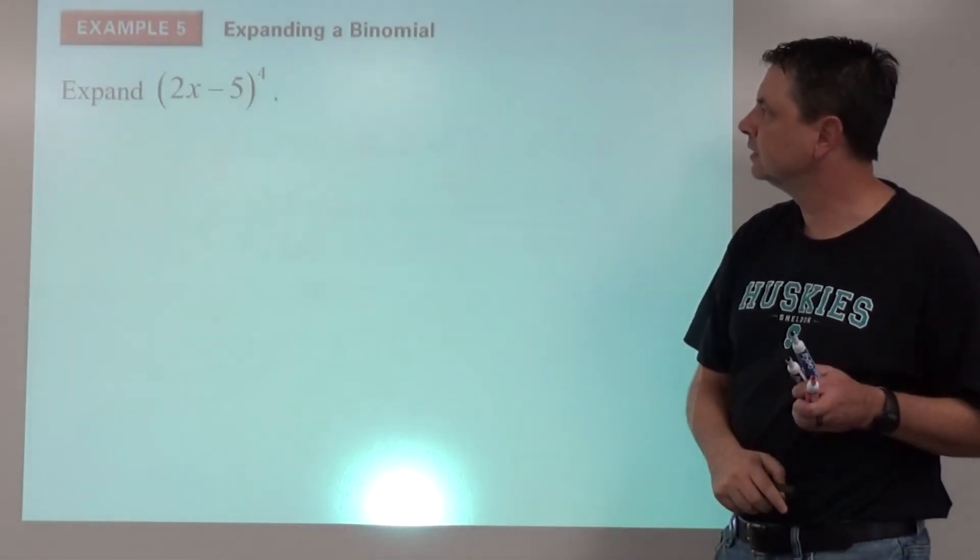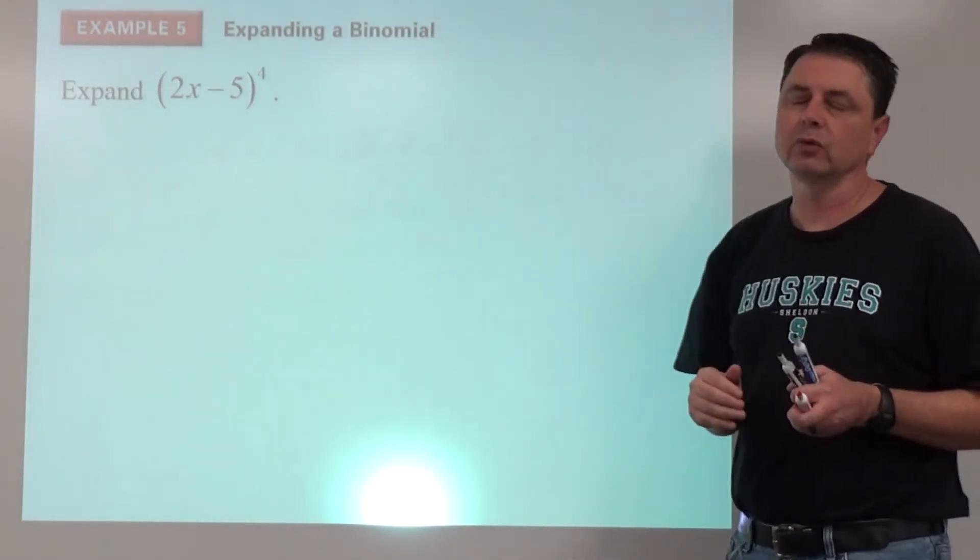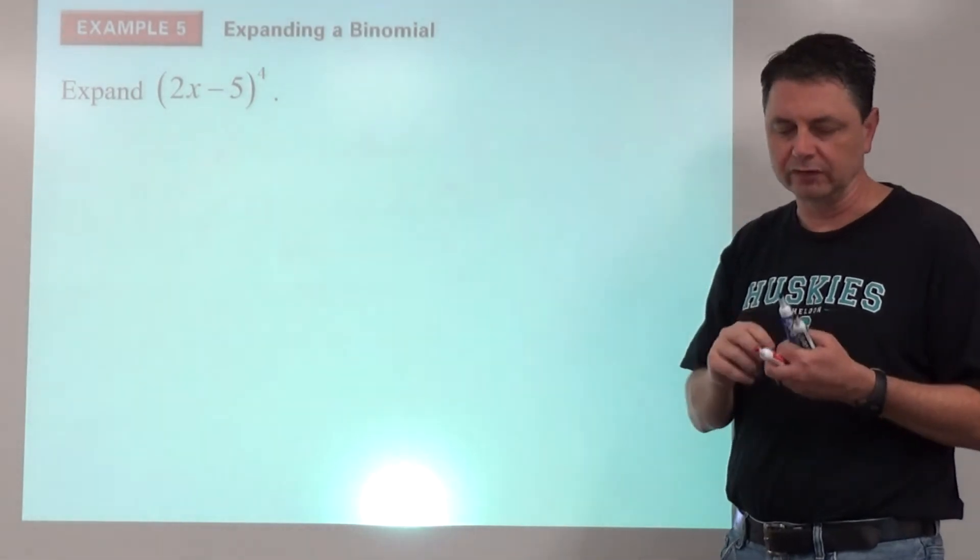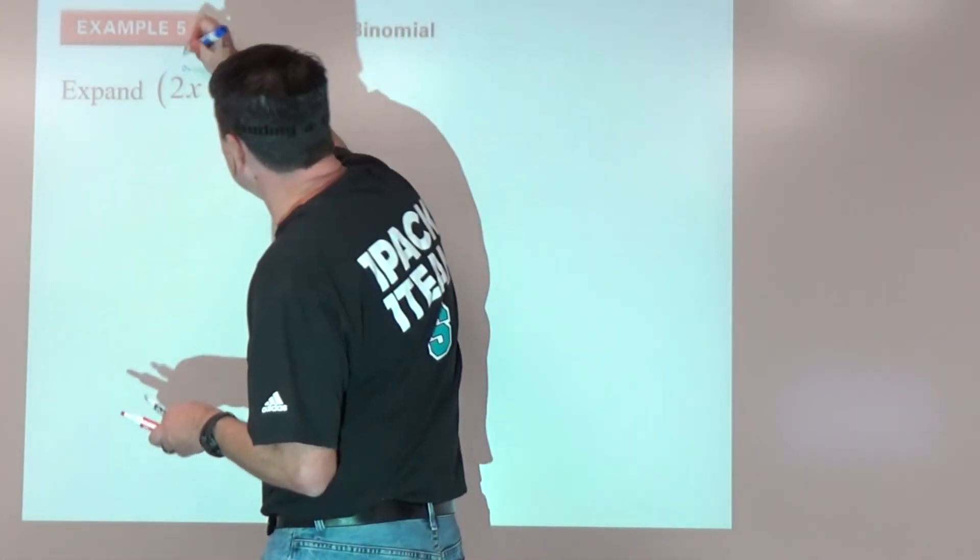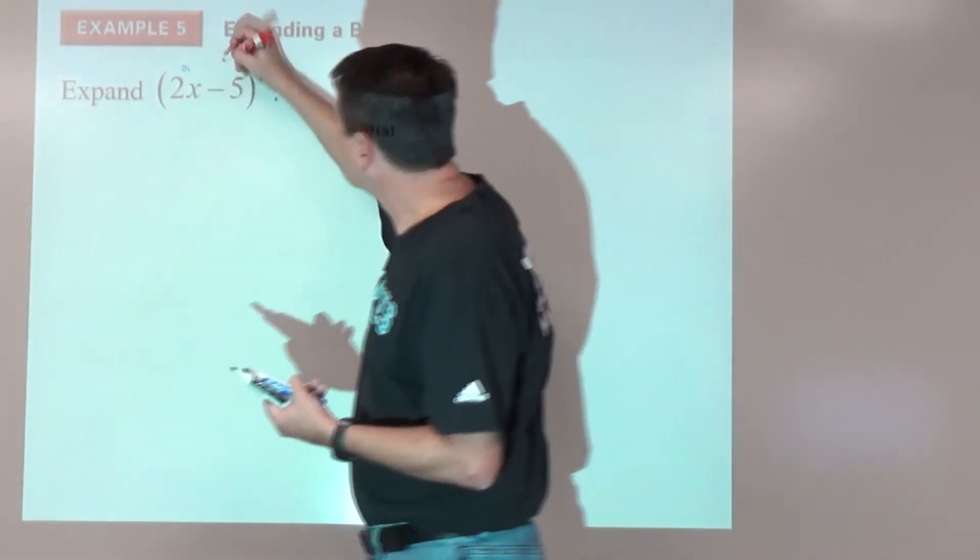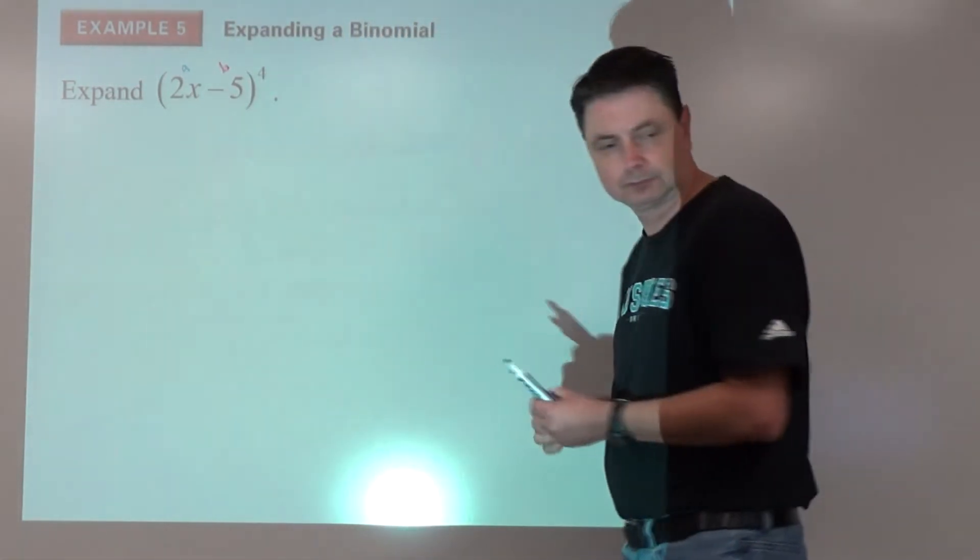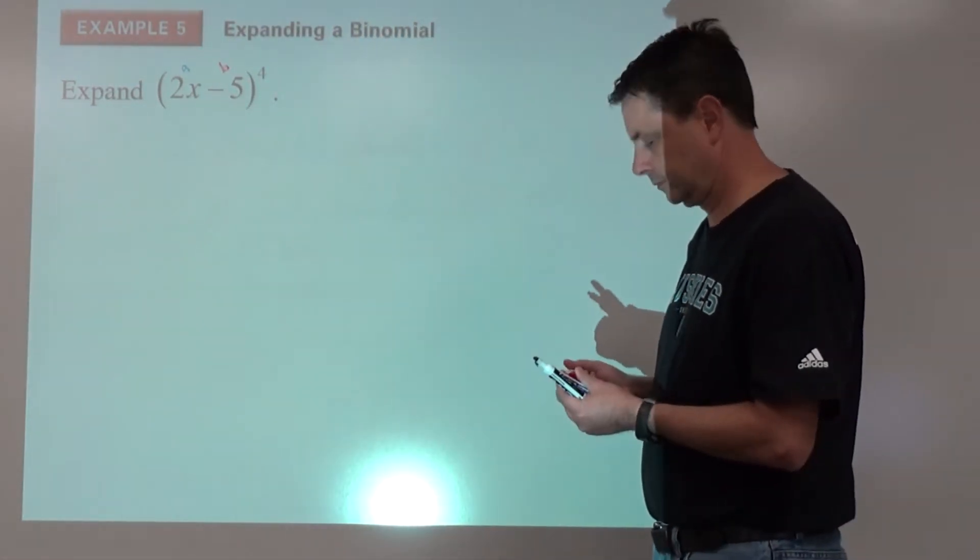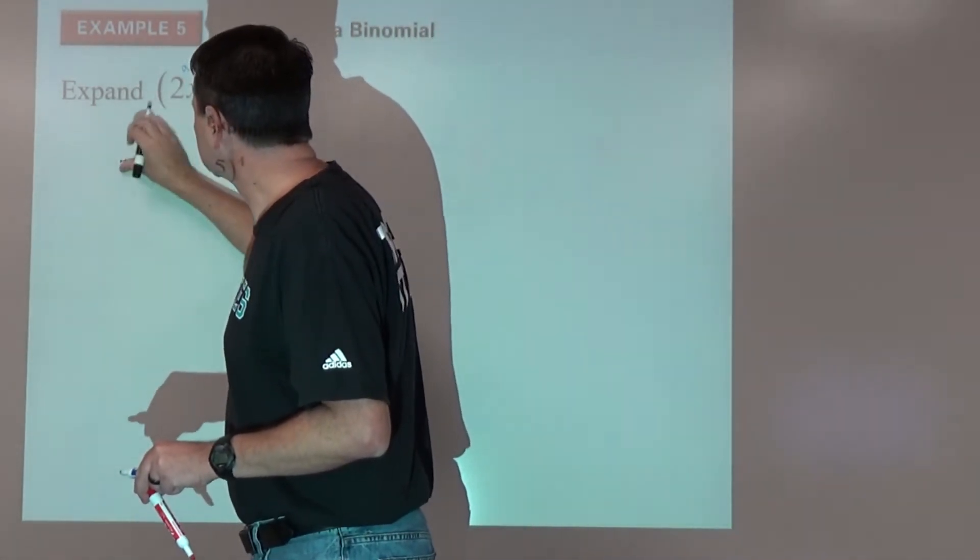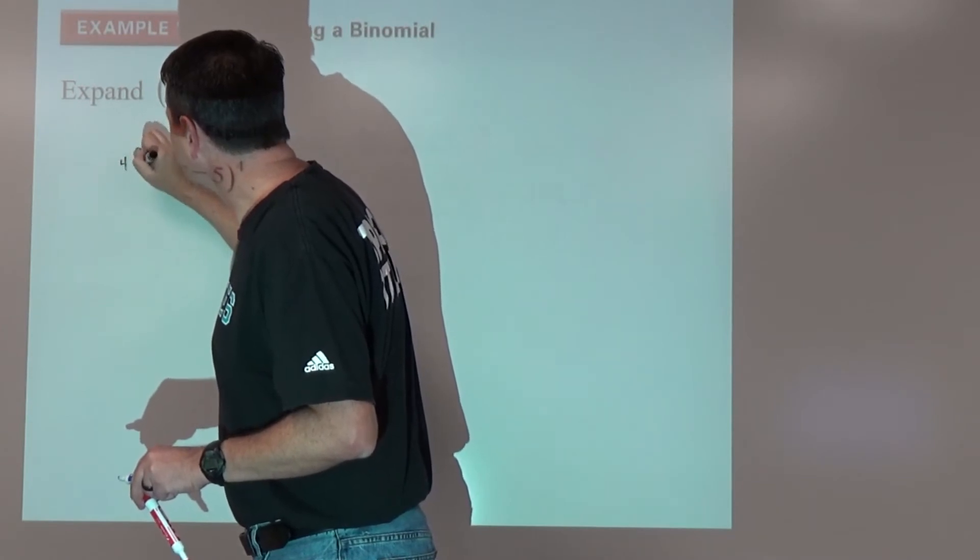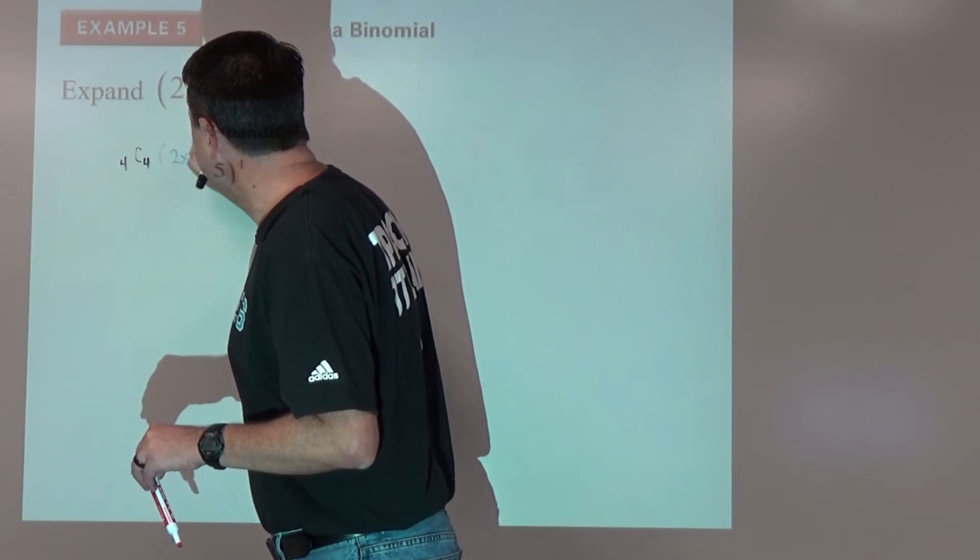Example number five. So this one is definitely one where with the fourth power, this is going to be our more efficient method. So again, let's identify a is 2x, b is negative five.